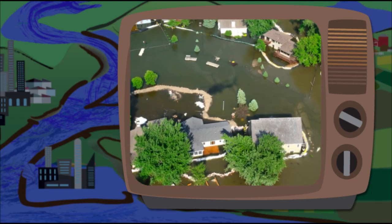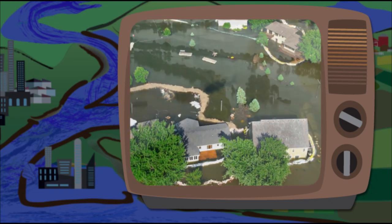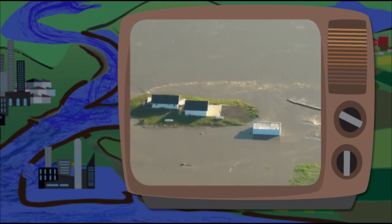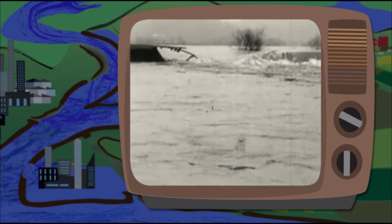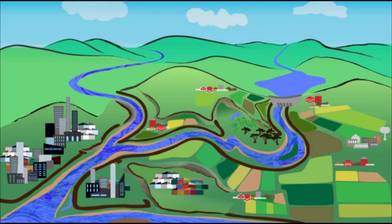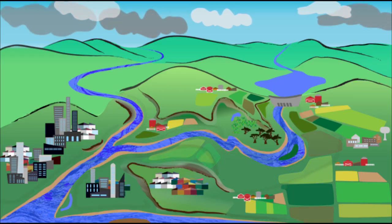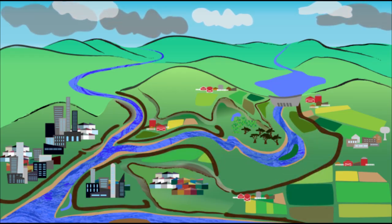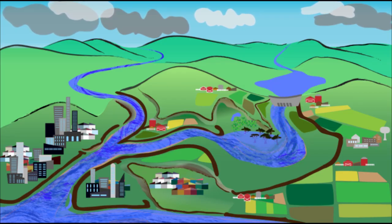Sadly, history has proven over and over again that in many cases, dams and levees alone are insufficient in protecting communities from floods. So what can be done to manage rivers and floodplains to reduce the risk of flooding? In short, rivers need more room. Levees that line a river's edge can be set back into the floodplain farther away from the river, allowing some of the floodplain to become inundated during floods, providing additional room for floodwaters.